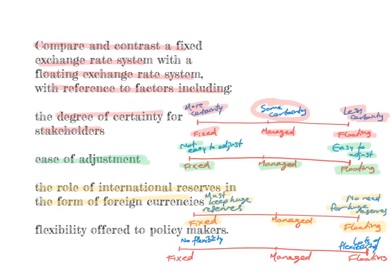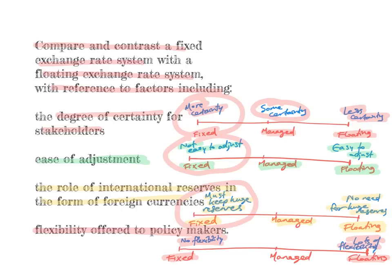The fourth and last factor is the flexibility offered to policy makers. Floating exchange rate systems offer much more flexibility — policy makers can adjust interest rates and focus on keeping inflation in check. Fixed exchange rate systems don't offer as much flexibility because the government has to relinquish its ability to use monetary policy to control inflation, since doing so would inevitably affect the exchange rate. So a fixed exchange rate provides more certainty and prevents speculation, but at the expense of easy adjustment to external shocks, the need for large foreign currency reserves at high opportunity cost, and reduced monetary policy flexibility.